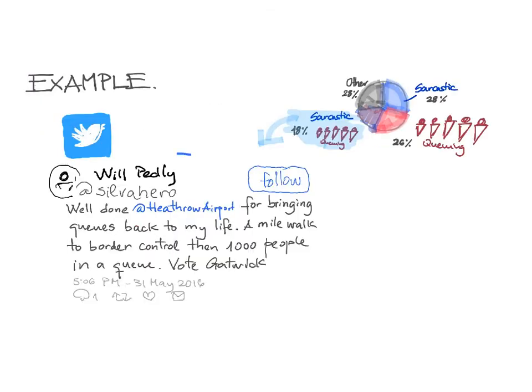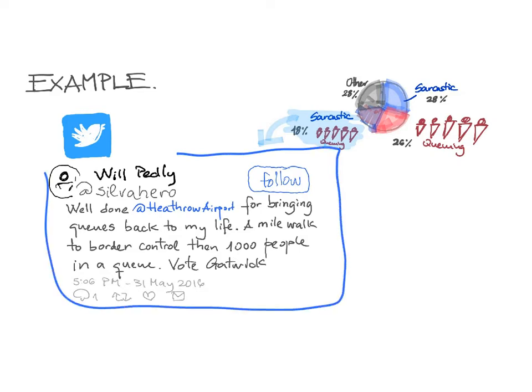For example, one tweet using both sarcasm and queuing reads: 'Well done, Heathrow Airport, for bringing queues back to my life. A mile walk to border control, then 1,000 people in a queue. Vote Gatwick.' This is an example of the kind of tweet that can fall into this failure category.